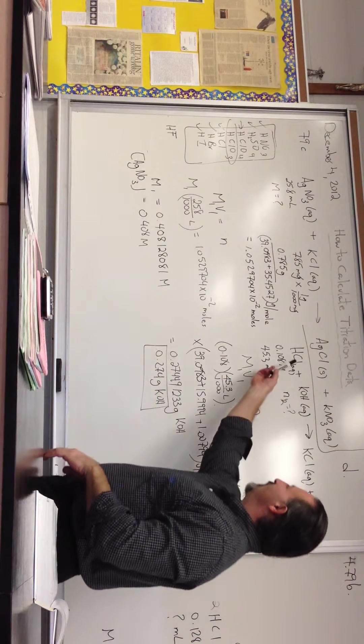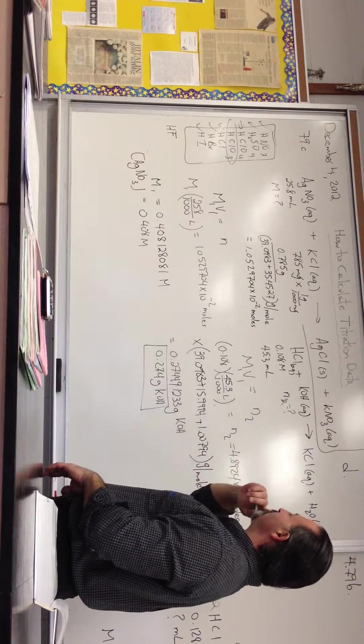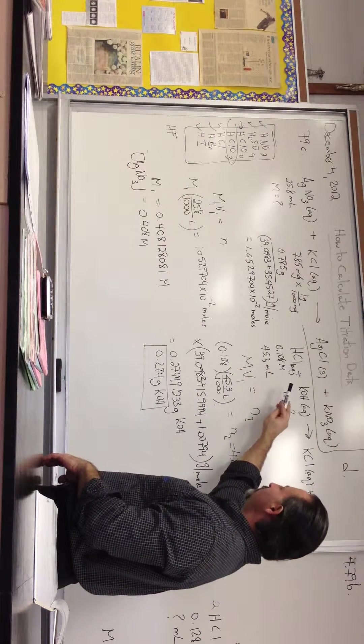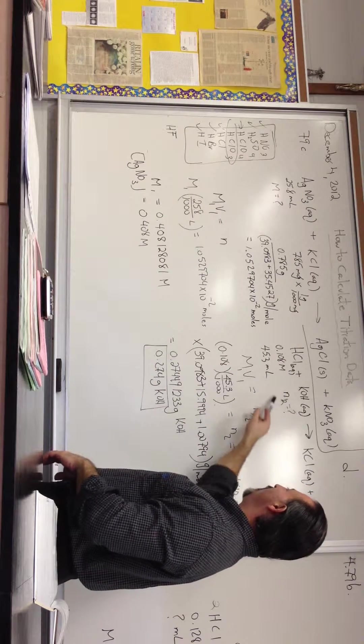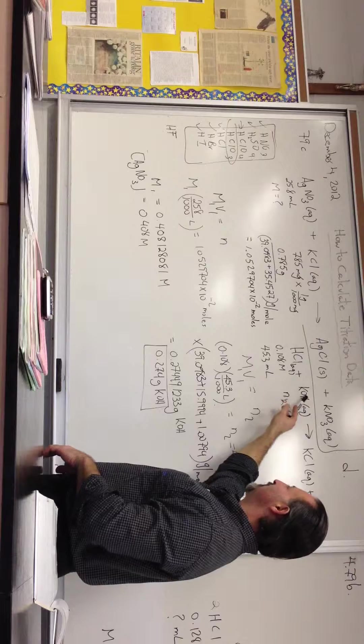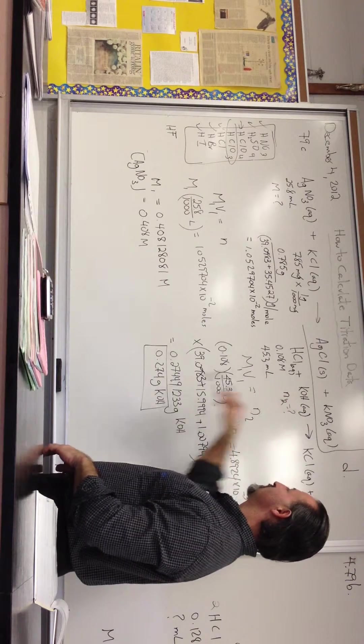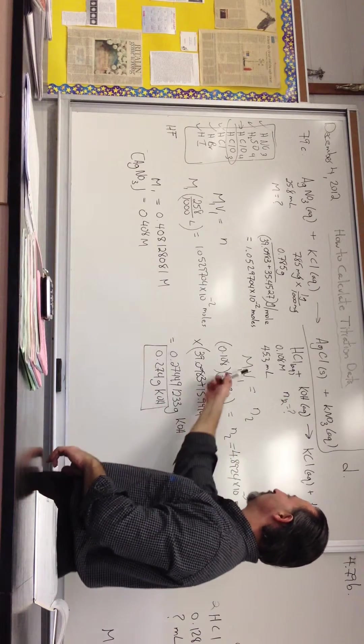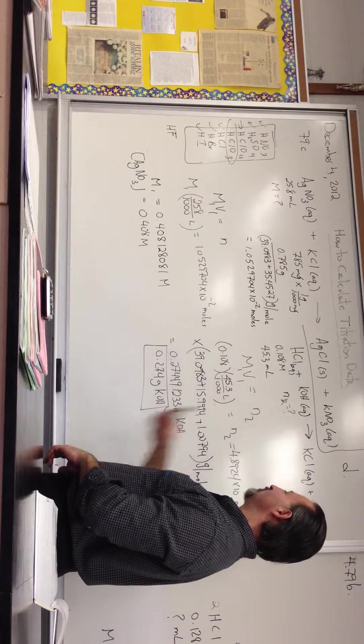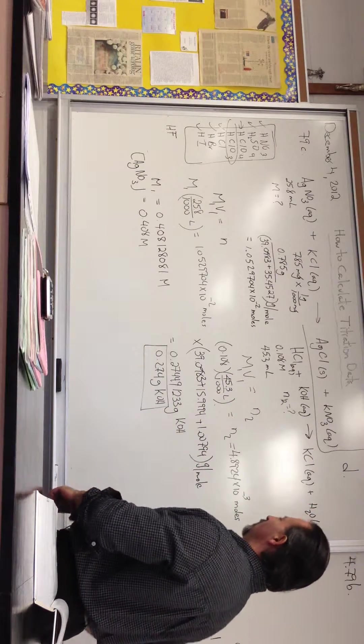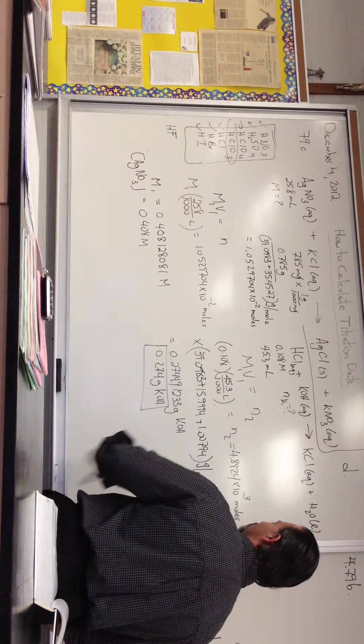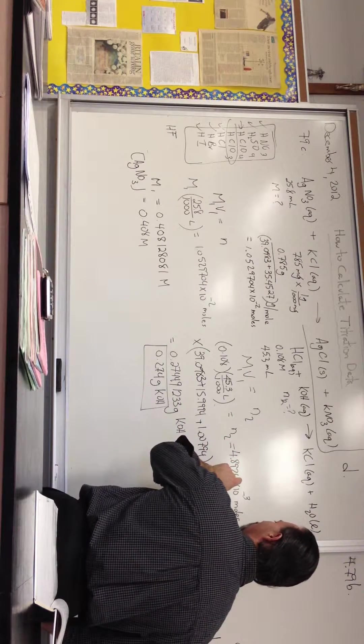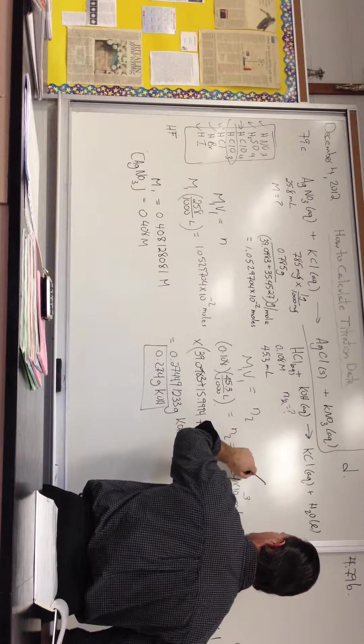So here we have a strong acid with a strong base. You're given the molarity and how many mLs of the acid are used, and you're asked how many moles of potassium hydroxide is going to react with this quantity of acid. So you require M1V1 is equal to N2. Plug in the numbers, and we find that it takes that many moles. So now we have moles of, this is how many moles of potassium hydroxide is going to be necessary.